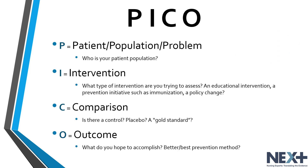PICO is a format that is used to write a good clinical question. The question needs to identify the patient, population, or problem that you intend to study, the intervention you plan to use, the comparison of one intervention to another if applicable, and the outcome that you anticipate. PICO is a mnemonic used to describe the four elements. P stands for patient, population, or problem — this is where you want to identify who is your patient or population, or what is your problem.